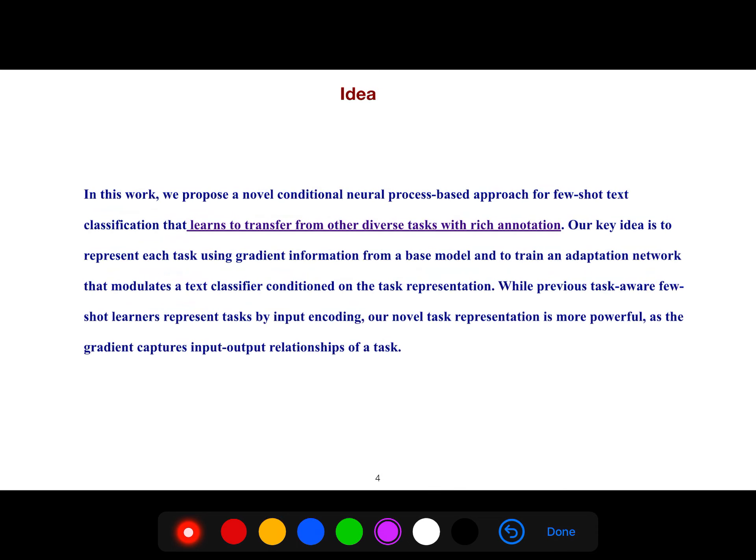In this work, we propose a novel conditional neural process-based approach for few-shot text classification that learns to transfer from other diverse tasks with rich annotation. Our key idea is to represent each task using gradient information from a base model and to train an adaptation network that modulates the text classifier conditioned on a task representation. While previous task-aware few-shot learners represent tasks by input encoding, our novel task representation is more powerful as the gradient captures input-output relationships of a task.